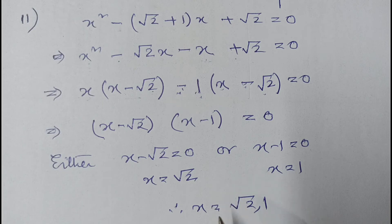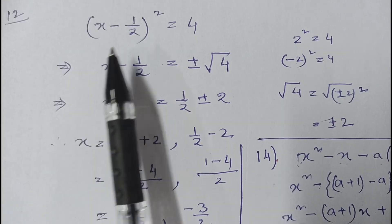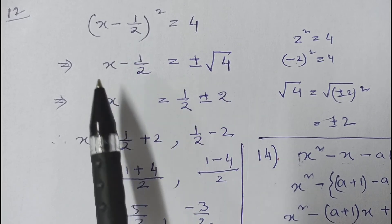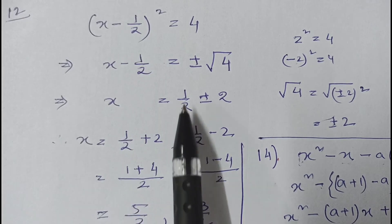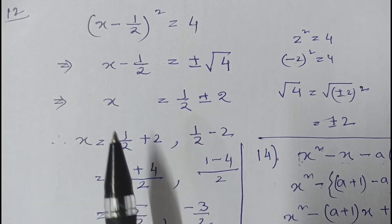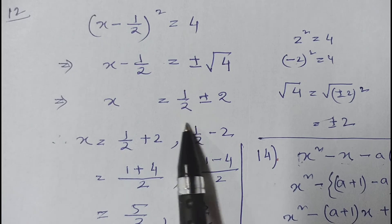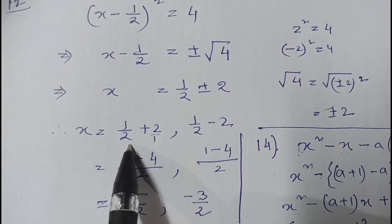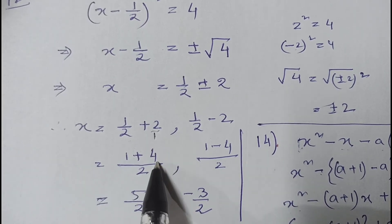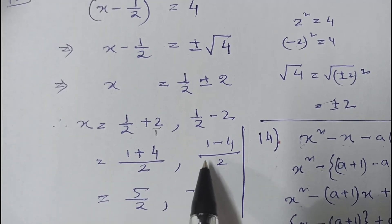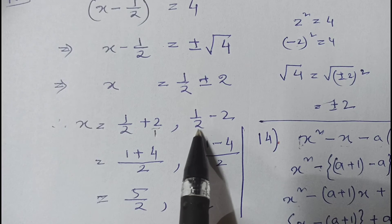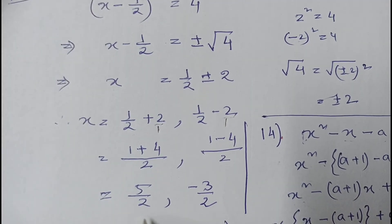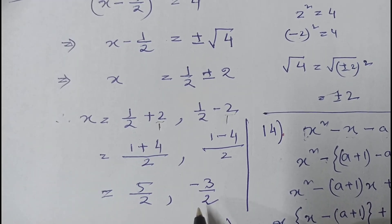Question number 12: (x - 1/2)² = 4. Taking square root both sides: x - 1/2 = ±2. So x = 1/2 + 2 or x = 1/2 - 2. For x = 1/2 + 2: combining gives 1/2 + 4/2 = 5/2. For x = 1/2 - 2: combining gives 1/2 - 4/2 = -3/2. Therefore the roots are 5/2 and -3/2.